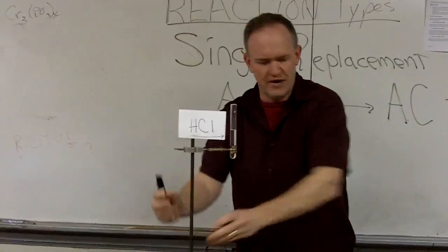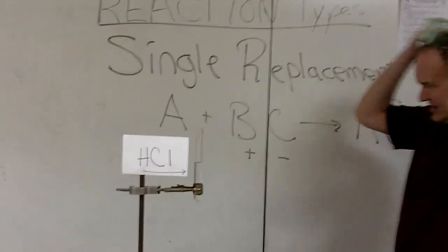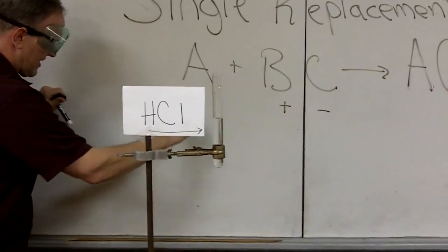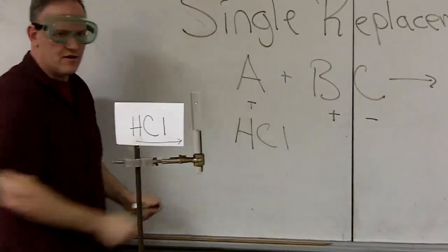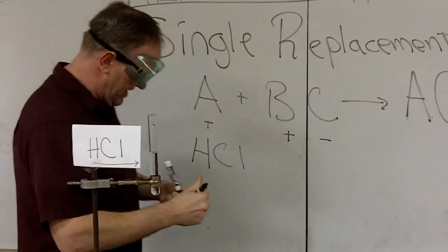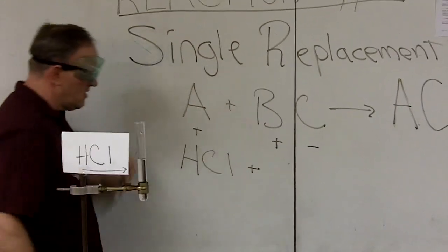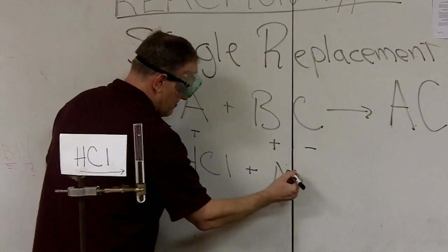One that we will do today is a reaction between hydrochloric acid and magnesium. In this reaction, we have hydrochloric acid. That would be the couple. Hydrogen is with chlorine. And here we have a solution of hydrochloric acid dissolved in water. And the thing that's going to be coming to the dance alone is magnesium.